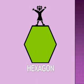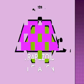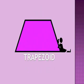This is a hexagon. It has six straight sides. Every side is the same length. This is a trapezoid. It has four straight sides. Two sides are equal and the other two are different.